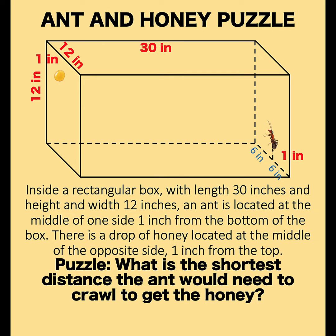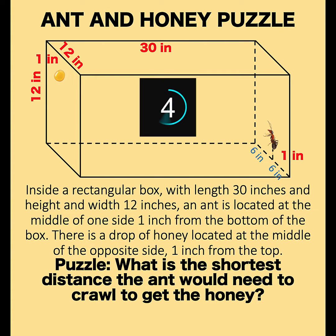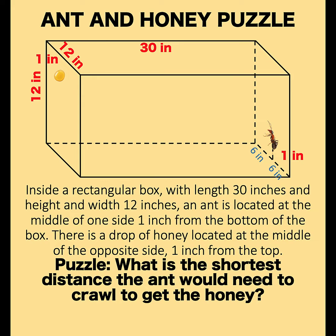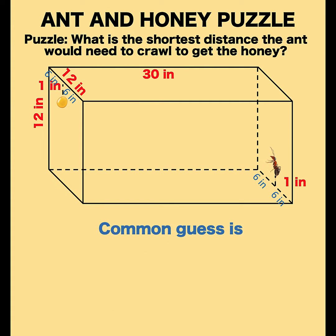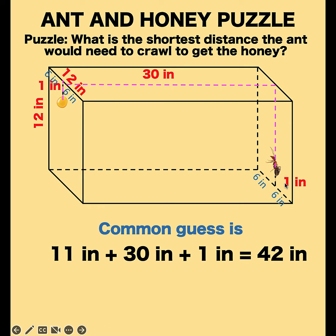You can pause the video and see if you can solve this math problem. The common tendency is to measure the distance this way: from the point one inch above the bottom, we go up 11 units, then we travel 30 inches across, and then we go down one inch to arrive at the honey. So the computation gives us 11 inches plus 30 inches plus one inch equals 42 inches.